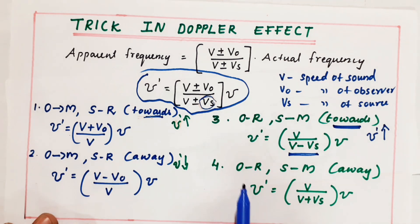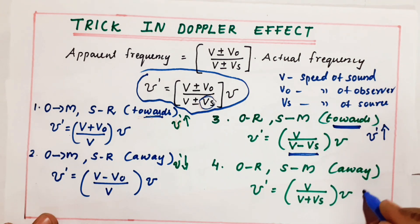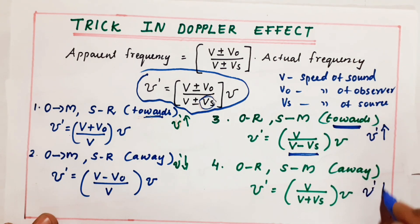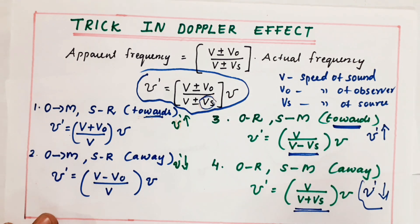But the reverse case: observer at rest, source is moving away. Away means the apparent frequency should decrease. So the denominator should connect with a plus sign: V by V plus V_S, into nu.